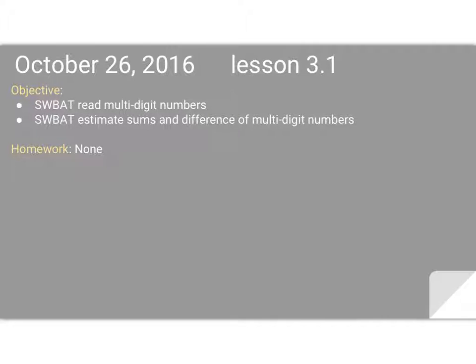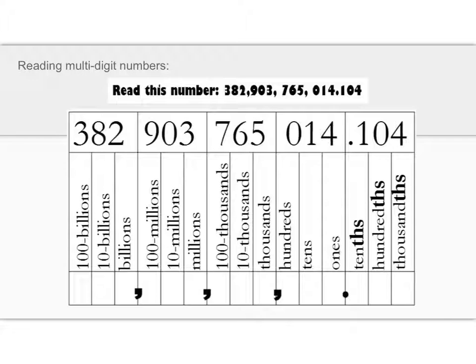Alright, so let's take a look at some examples. I'm going to read this very long number to you. And this chart helps you place the digits in the right place and helps you read this number as well. So this number would be written as 382,903,765,014, and here's the tricky part.